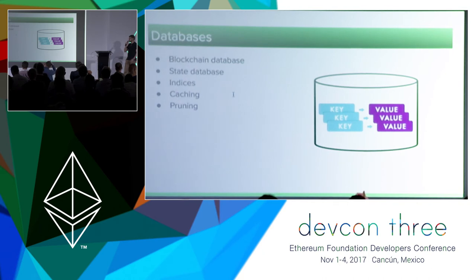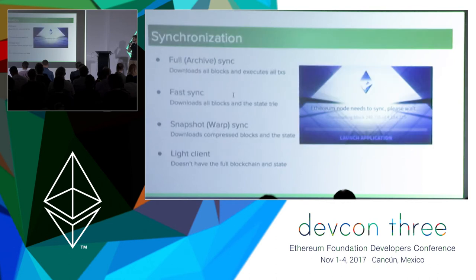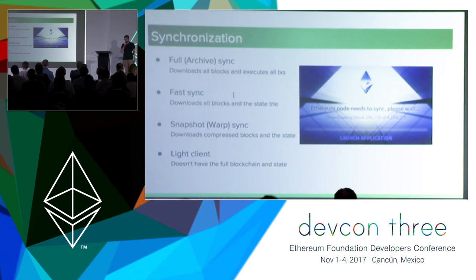Clients typically implement some indexing and caching strategies on top of the database to make queries more efficient. Some clients also implement pruning of the state data — compacting the state database by removing older parts that are not normally needed. Synchronization is the process that allows us to get the latest blockchain and state data from other nodes of the network, built on top of both the networking and database layers.